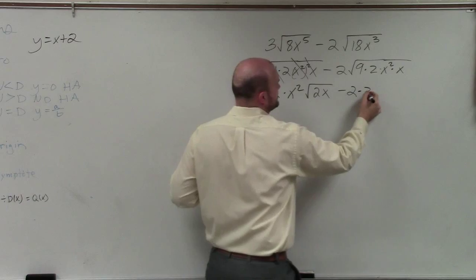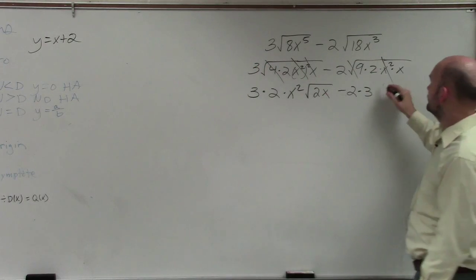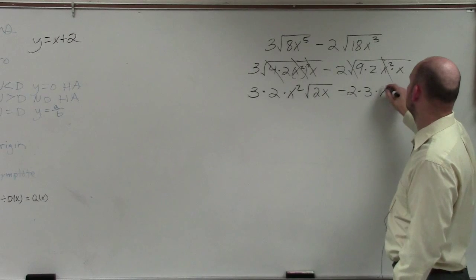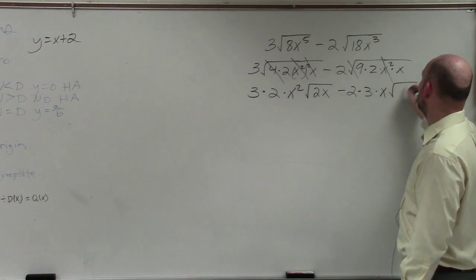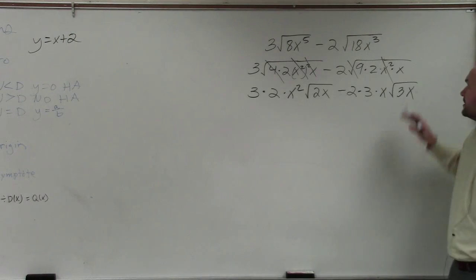Minus 2 square root of 9 is 3. Square root of x squared is going to just leave me with an x. And then I'll have square root of 3x. I'm sorry, 2x.